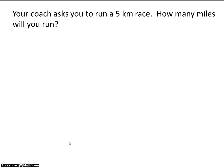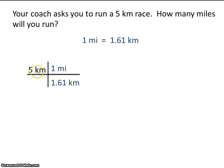Let's do an example problem. Your coach asks you to run a 5k race — how many miles will you run? A 5k is 5 kilometers, and that's our given. The first step is always to write your given. Now we need a conversion factor between miles and kilometers. Whatever unit is in the numerator, if that same unit appears in the denominator, it will cancel out. In your calculator, do 5 divided by 1.61. That will leave you with an answer with one significant figure, and the answer is 3 miles.